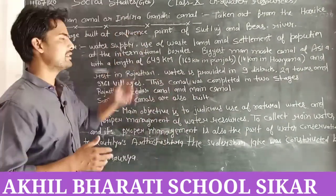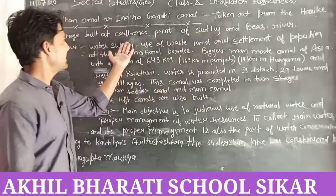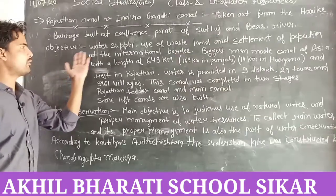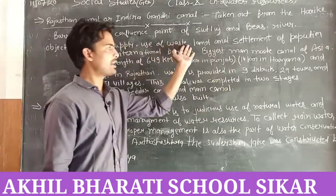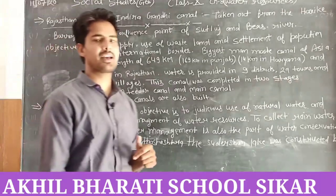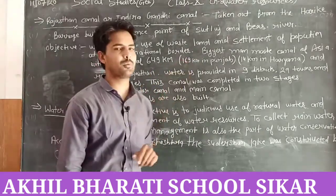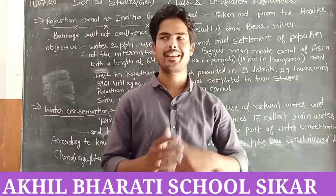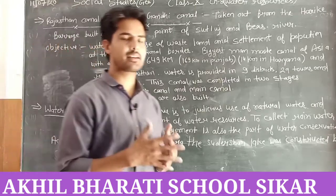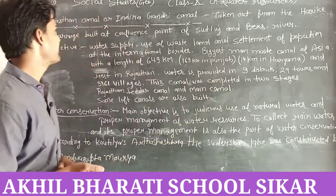This topic comes frequently in exams for two-mark questions. To summarize: Indra Gandhi Canal starts from the Harike Barrage at the confluence of the Satlaj and Vyas Rivers. Its major objectives are water supply, use of wasteland, and settlement of population at the international border. It is Asia's biggest man-made canal with a total length of 649 km – 169 km in Punjab, 14 km in Haryana, rest in Rajasthan. It was completed in two stages: Rajasthan Feeder Canal and Main Canal, with seven lift canals also constructed.